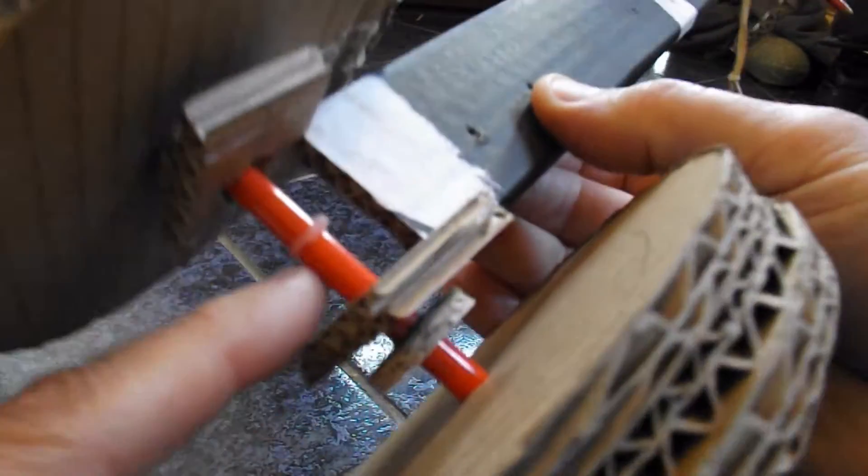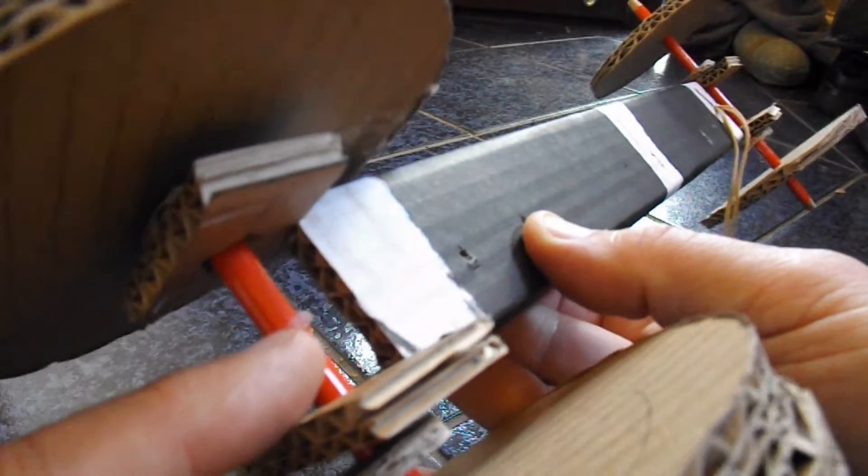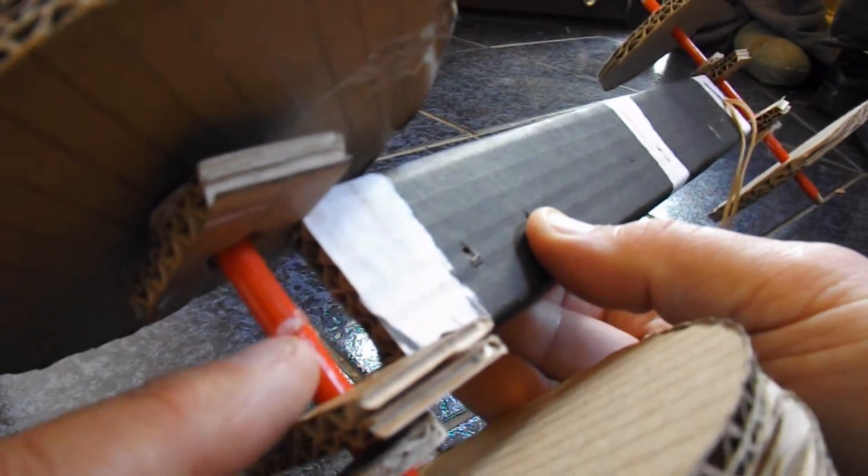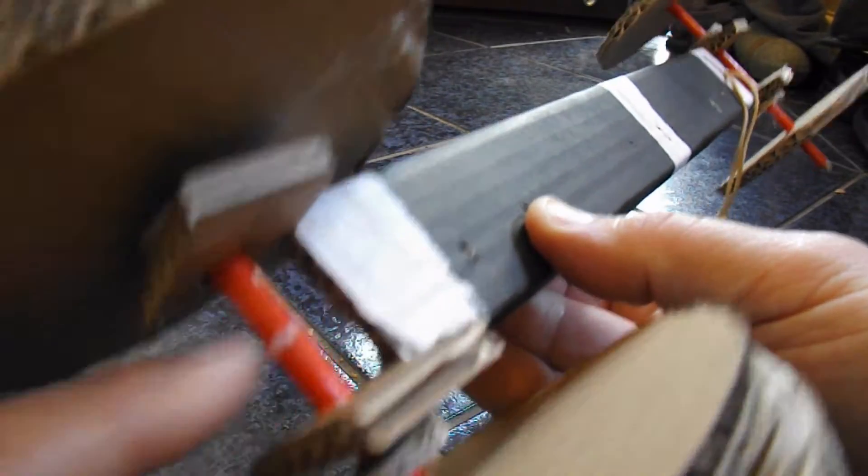And on the back axle, I'm not sure if the camera will pick it up, I've put a little bit of hot glue to make a little spike to hold the rubber band as we're winding it up.